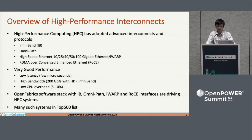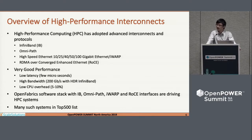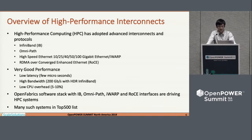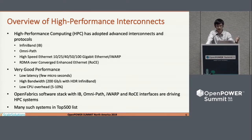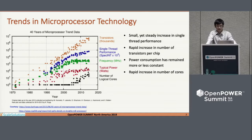On the interconnect side you have InfiniBand and OmniPath — very fast interconnects. Also coming in future years is Cray Slingshot. These have very good performance: latency is very low, just a few microseconds; bandwidth is very high, up to 200 gigabit per second. And because of RDMA, you can bypass the CPU during communication, so it has very low CPU overhead. You can see all these interconnects in the top 500 supercomputer list — very common there.